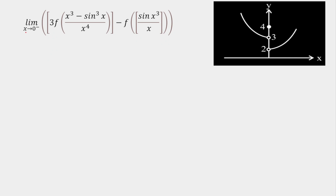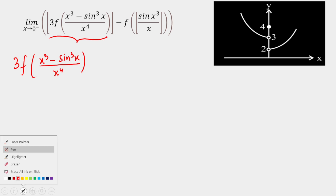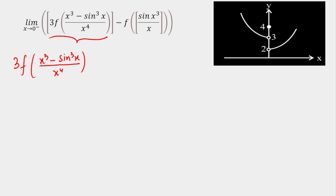Since x is approaching 0 negative, we have two parts, so let's tackle them one by one. The first term is 3 times f of (x³ - sin(x))³, the whole thing divided by x to the power 4. Now I want to determine the tendency of the function — that is, as x approaches 0 negative, I want to know where the input is tending towards. So let's take the input separately: x³ - sin(x), whole cubed, divided by x to the power 4.